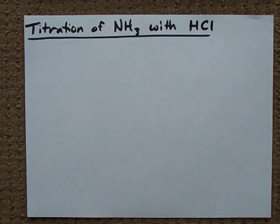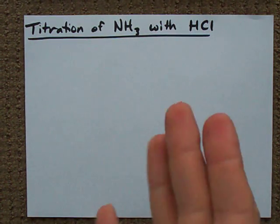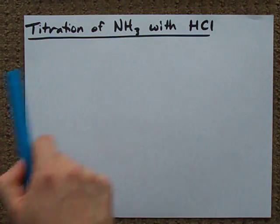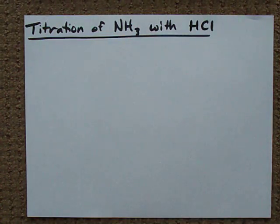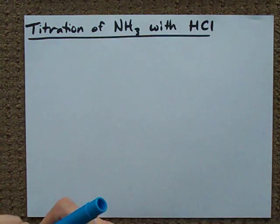All right, this is a bit of a weird question, but it gets asked a lot, so I guess I have to explain it to you. What happens when you titrate an ammonia solution with HCl?